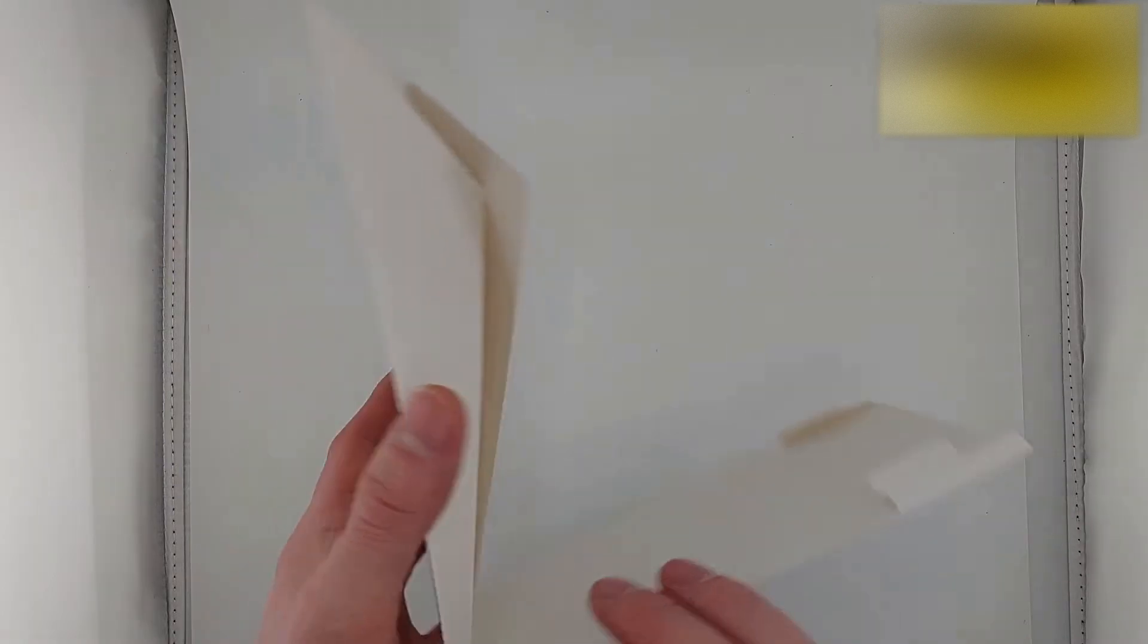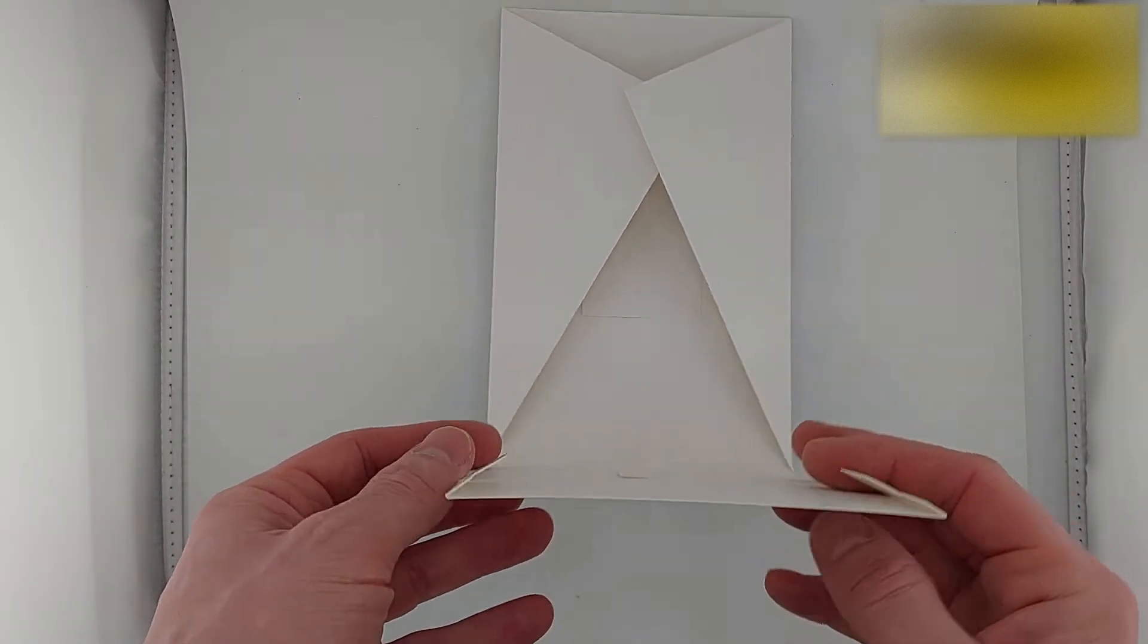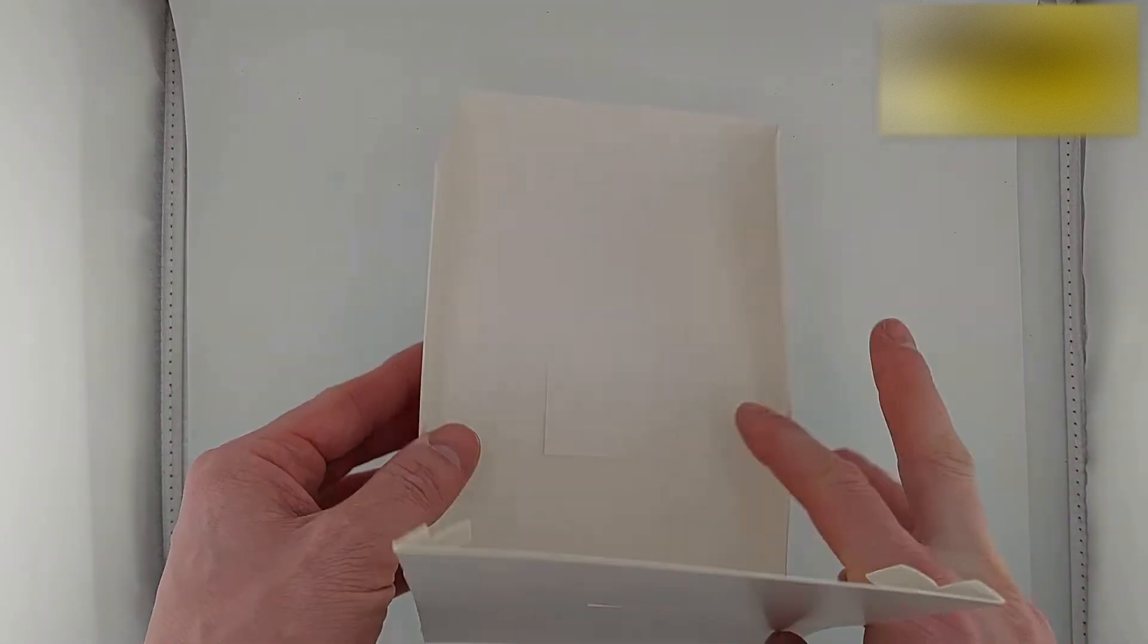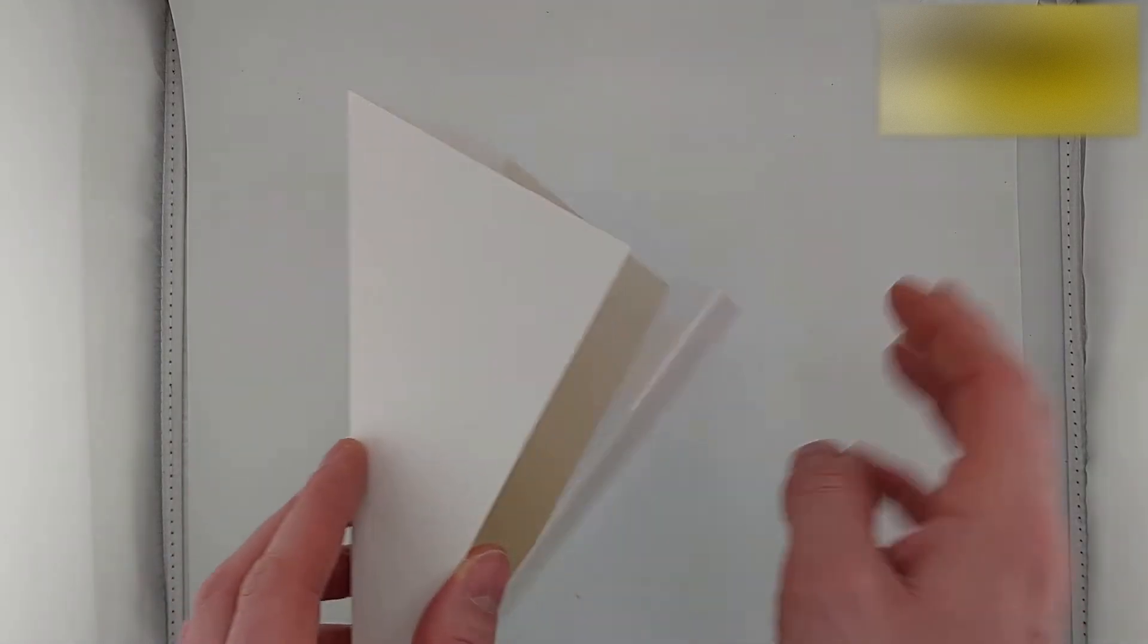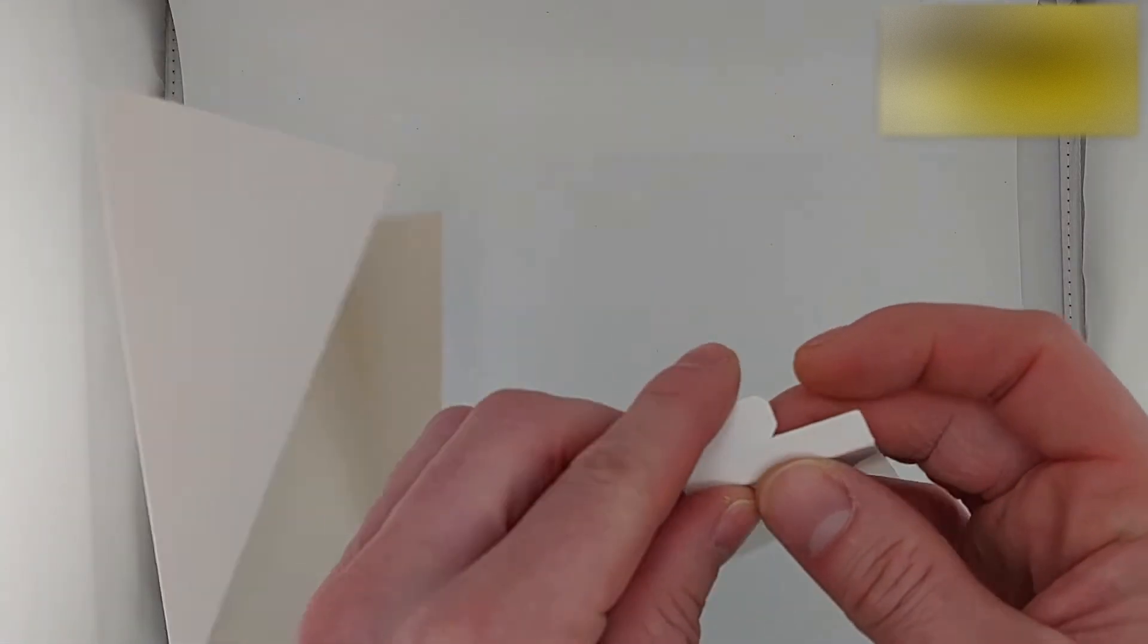Okay then, so it's come flat packed in the post. There are various tabs around. So what we're going to do is we're going to lift up and as you can see this bit here has an extra folding section.